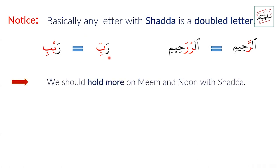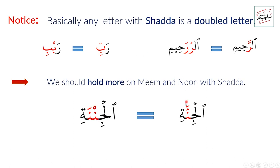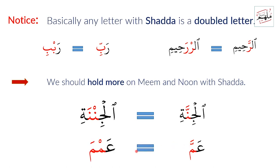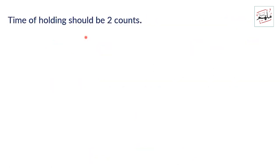We should hold more on Mim and Nun with Shadda more than other letters. For example, 'al-jinnah' — here it is a double letter: Nun sakinah and Nun mutaharrikah, Nun with fatha. Similarly, 'al-jinnah' equals Meem sakinah and Meem with fatha. We are talking about timing.